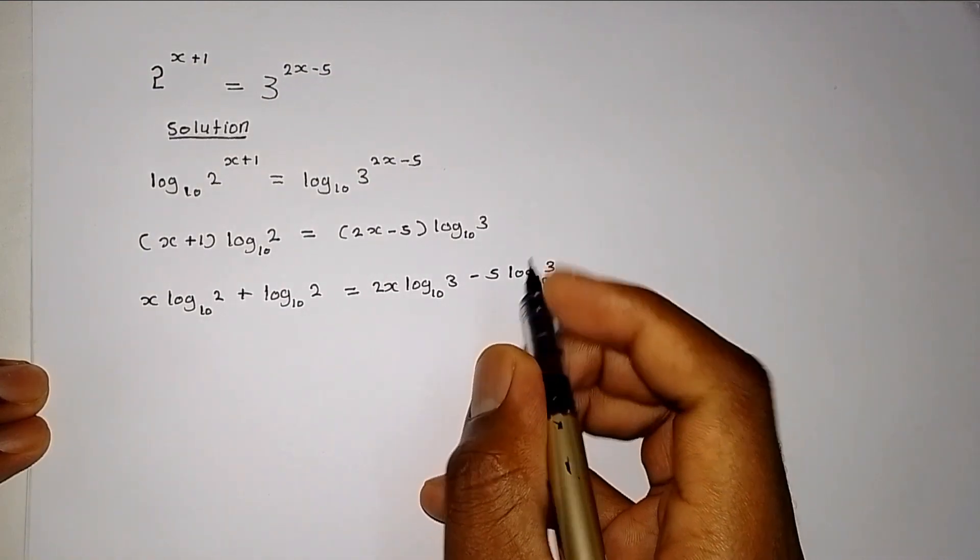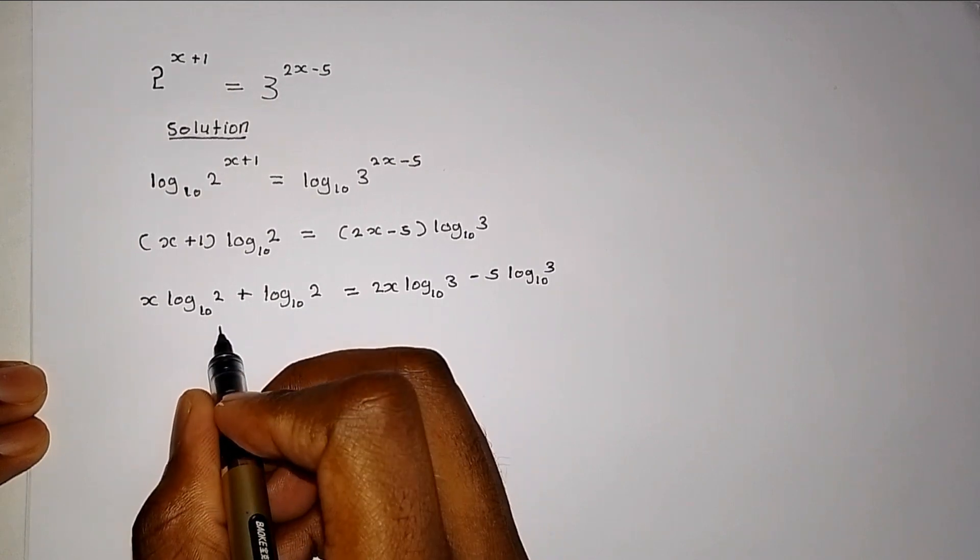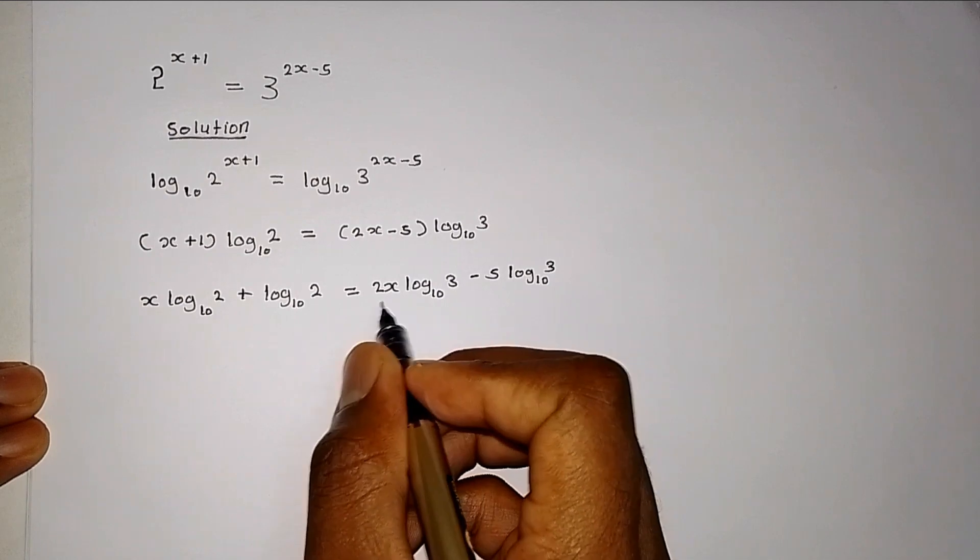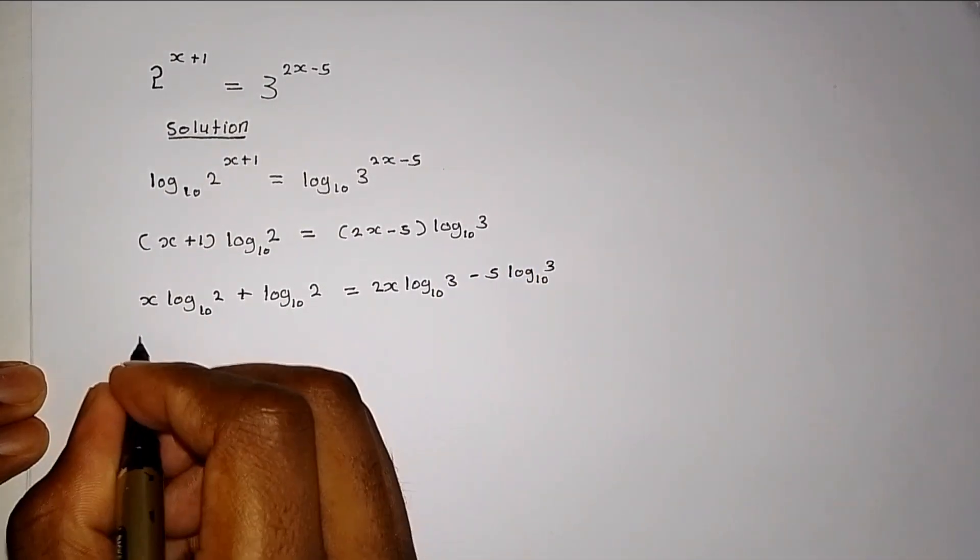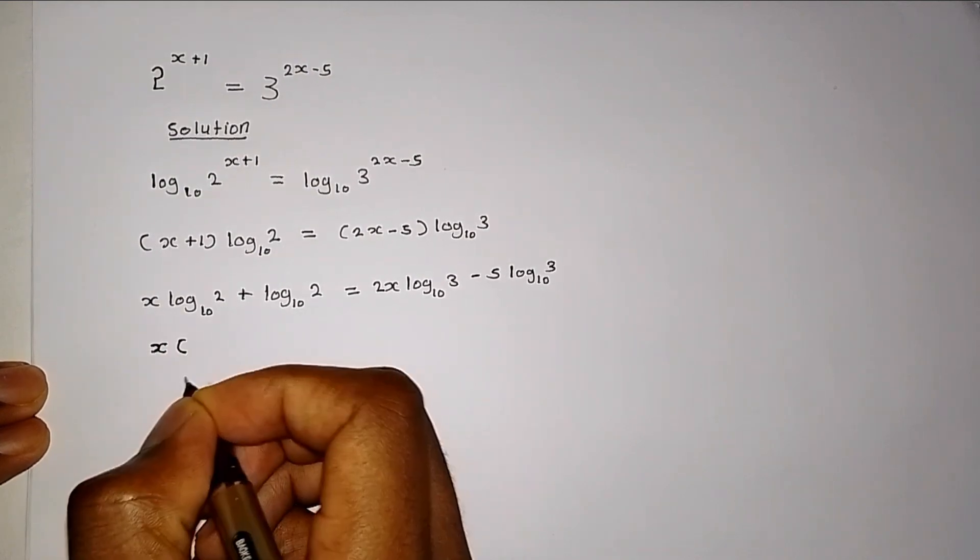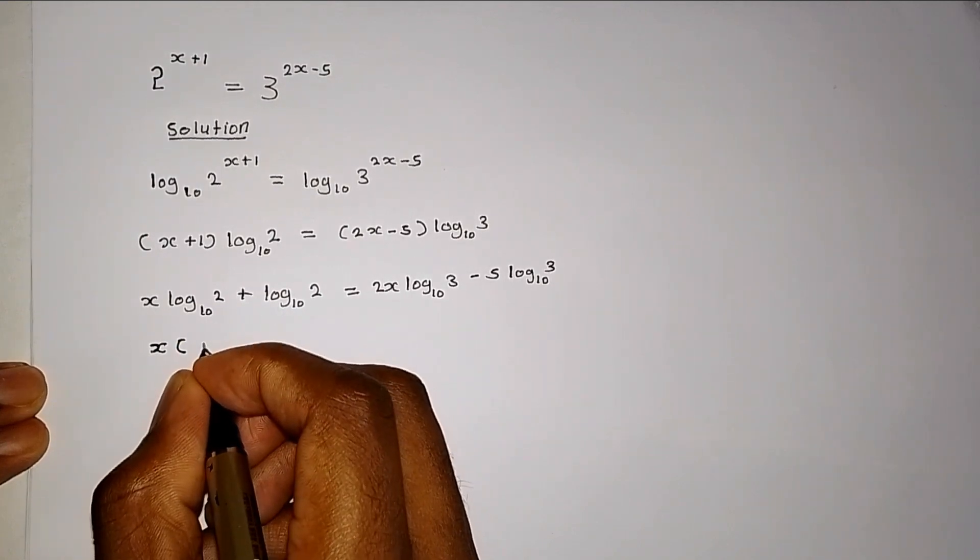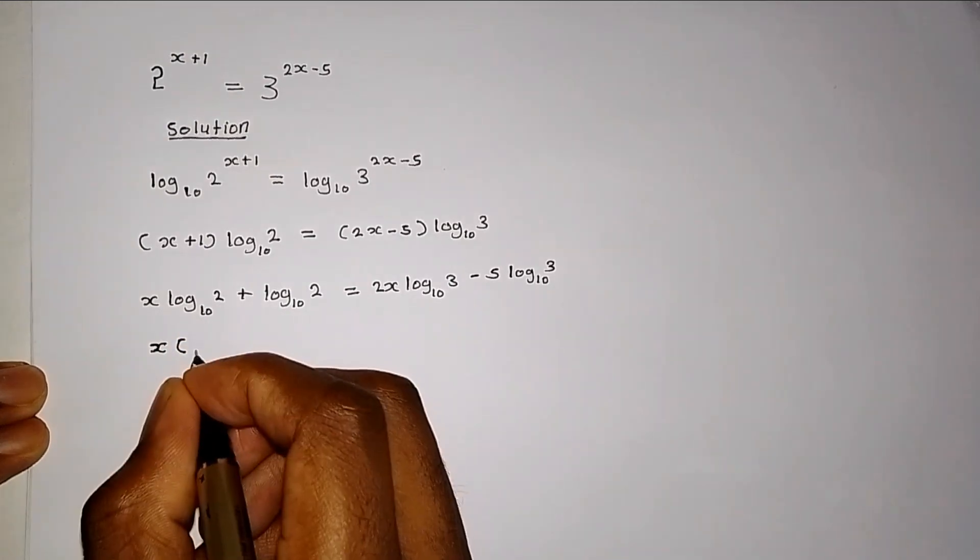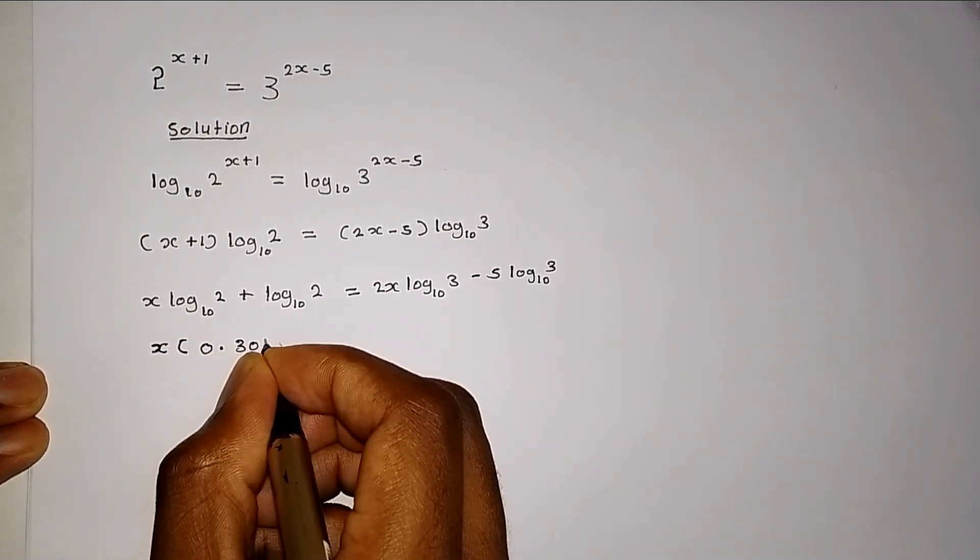After opening the brackets, we have to find the values for log 2, for the logs of 2, excluding the values for x first. Because x is unknown, we bring it here. That will be x multiplied by the value of log 2. And what is the value of log 2? When you find the value of log 2 to base 10, it will give us 0.3010.